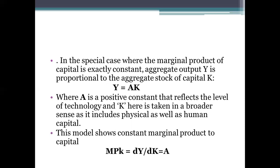In the special case where the marginal product of capital is exactly constant, aggregate output Y is proportional to the aggregate stock of capital, written as Y equals AK. A is a positive constant reflecting the level of technology. K is taken in a broader sense, including both physical and human capital, since no distinction is made between them. This model shows a constant marginal product of capital: MPK equals dY/dK equals A.